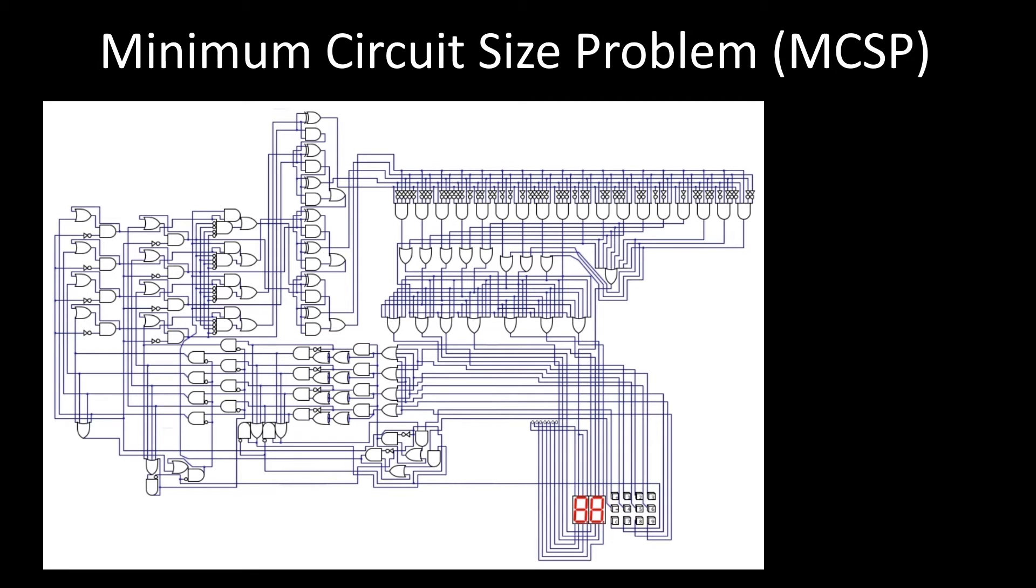The problem is in NP if the logical function is given as a truth table, since any circuit of size at most k can be efficiently checked for implementing the truth table. Note that this would not be immediately true if the function had been given as a circuit, but this is not the case in the standard formulation of the problem. The problem seems very difficult. In fact, it is so difficult that even with the whole truth table given as input, which has size exponential in n, no polynomial algorithm in the size of the truth table is known to solve it.